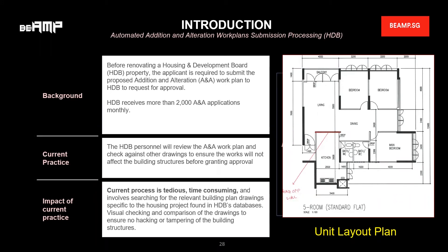The current practice: HDB officers will review the submission and check against our structural drawings to ensure the proposed ANA work won't affect existing building safety before we grant the renovation approval. This current process is tedious and time-consuming. It involves searching the relevant drawings specific to the building project in our database. The officer will carry out visual checking and compare the submission to confirm it won't affect the existing structure in terms of demolition work, ensuring existing safety is intact.